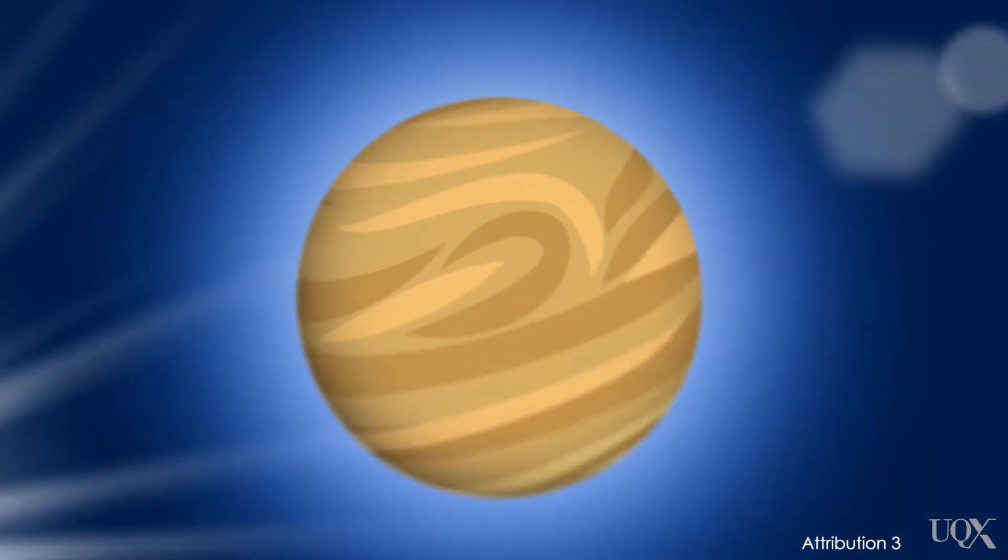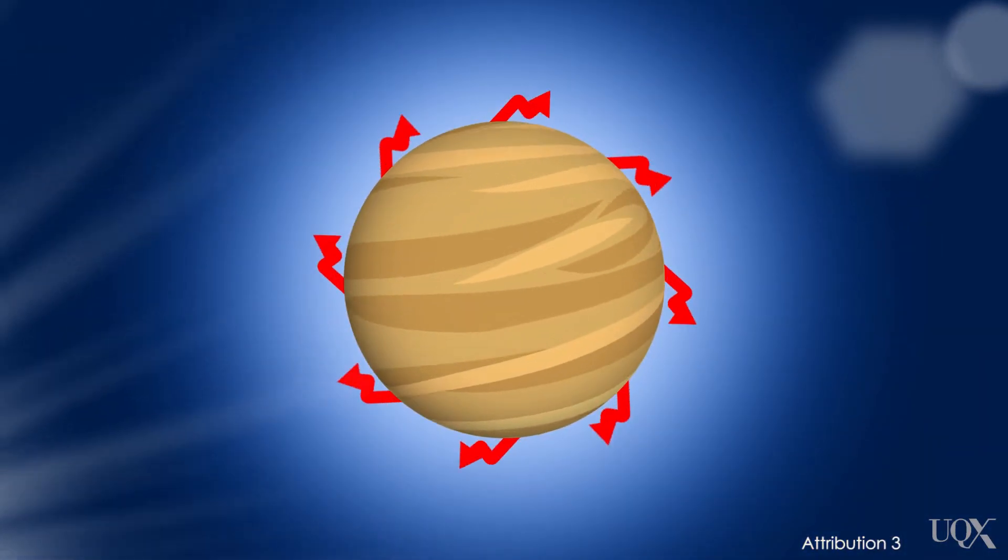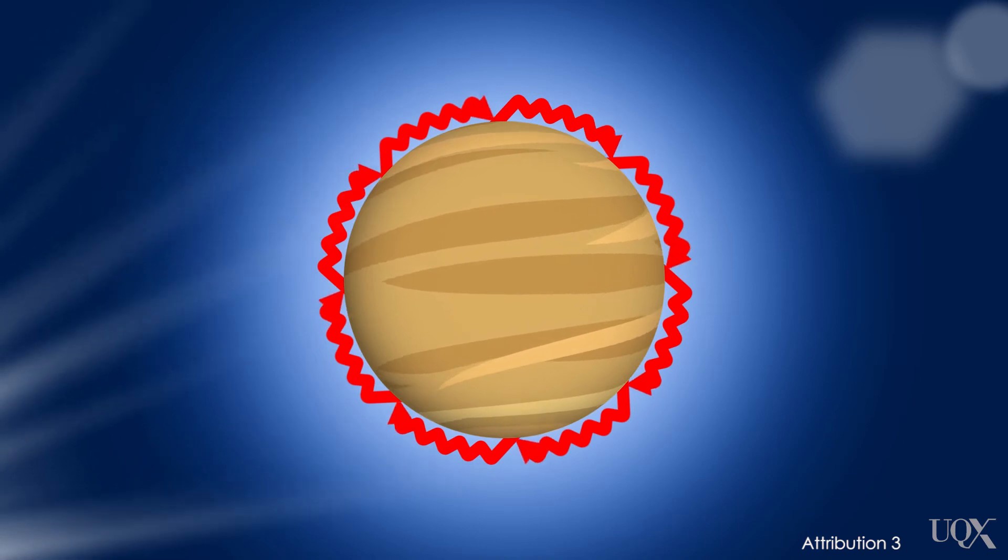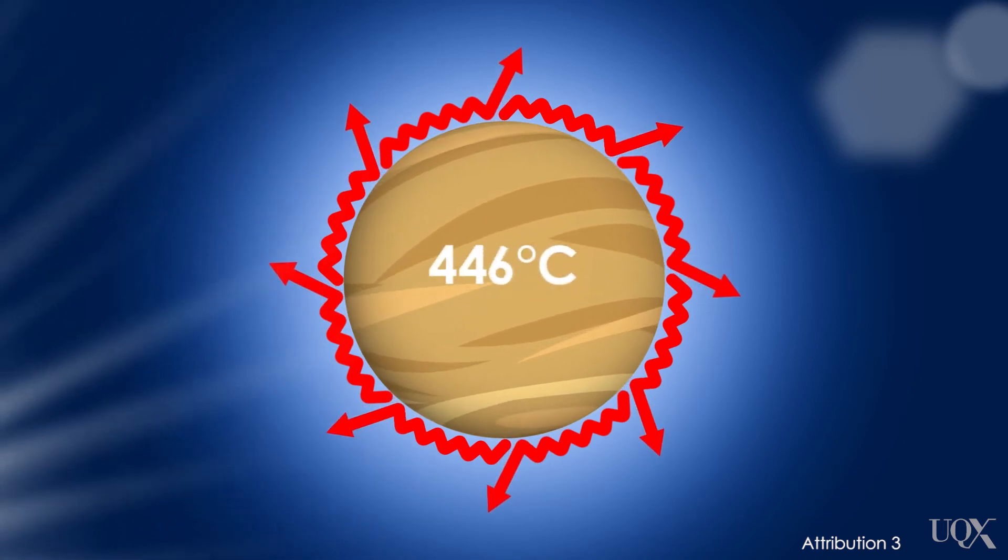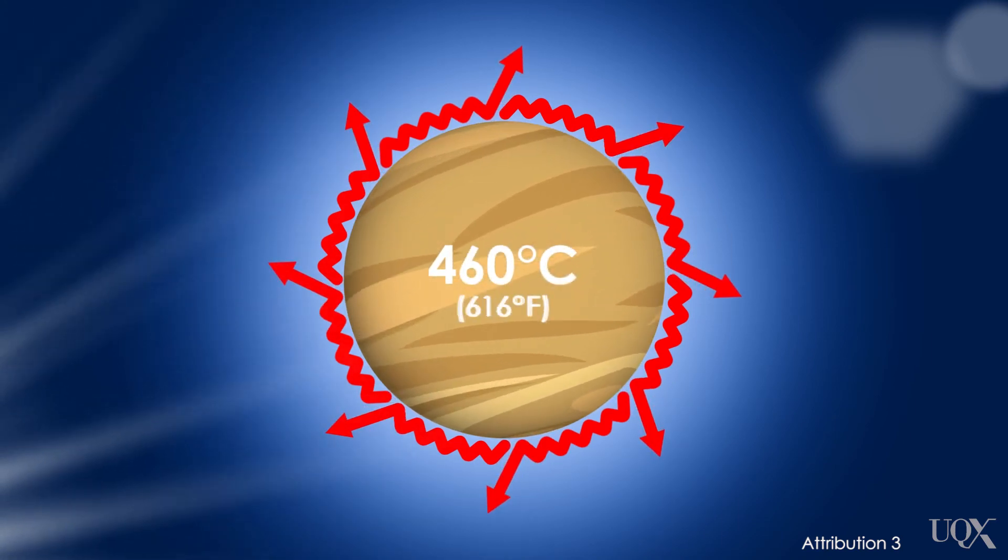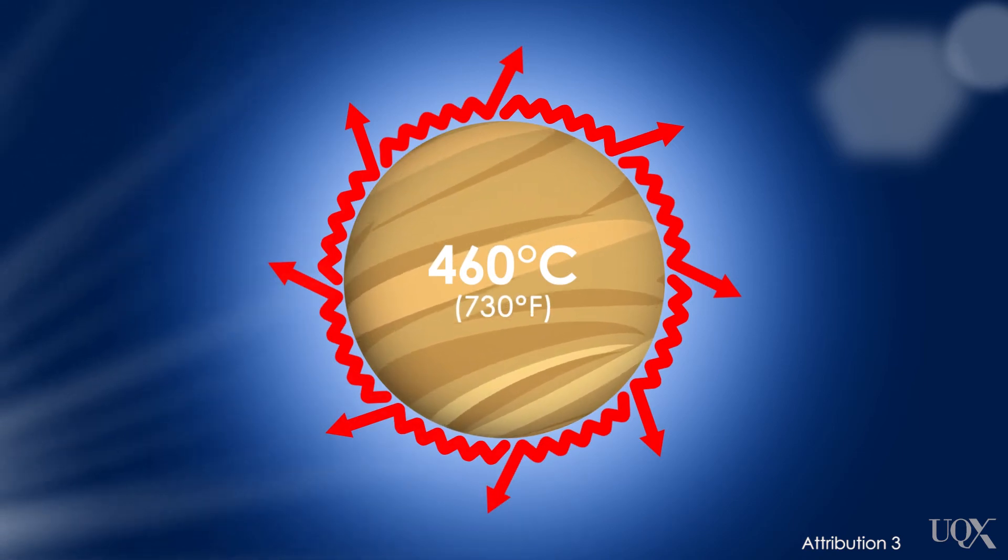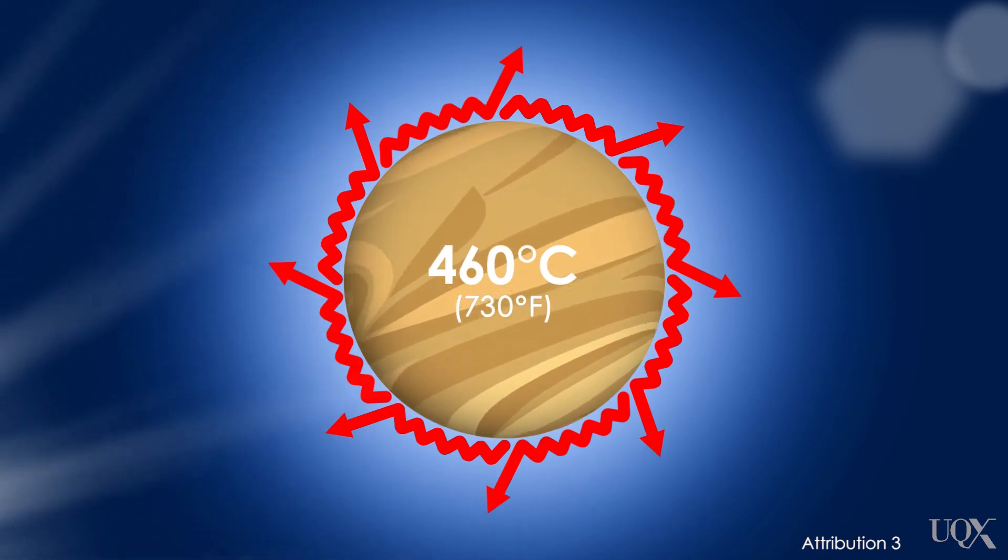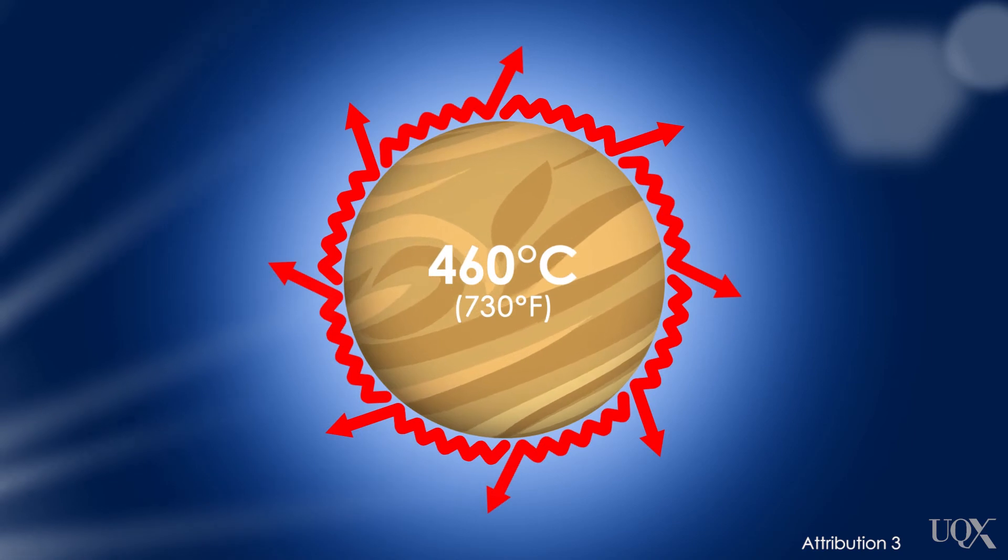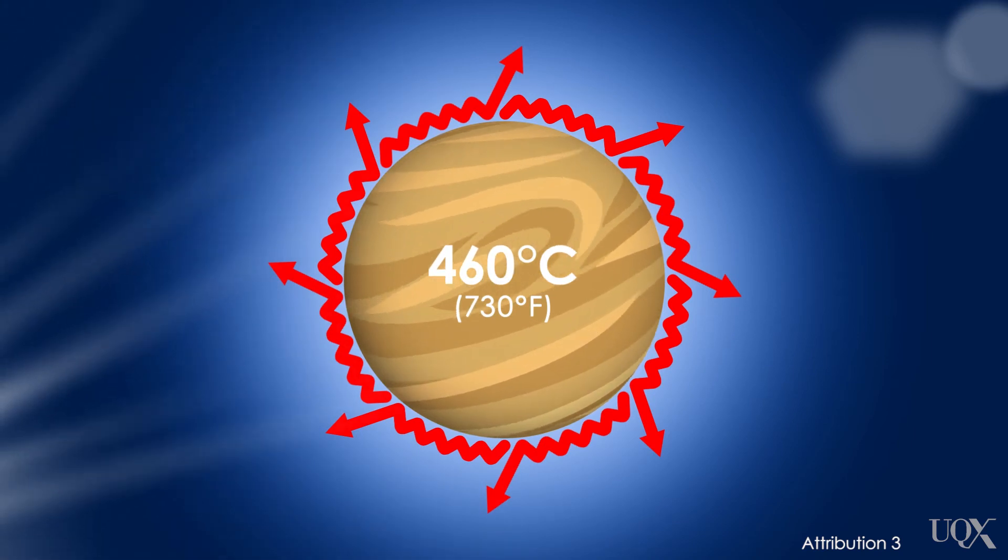At the other extreme, Venus has a runaway greenhouse effect much bigger than Earth's. Its temperature is an intense 460 degrees Celsius or 730 degrees Fahrenheit. It's like this day and night all year long. Venus doesn't even have seasons because the greenhouse effect is so strong.